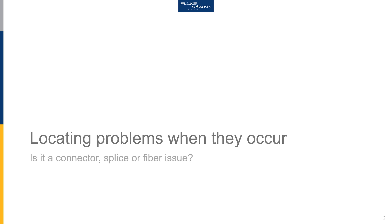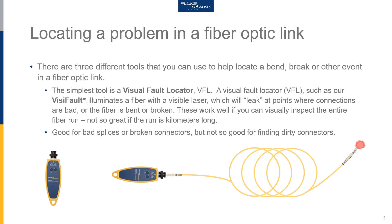Today we're going to look at locating problems when they occur on a fiber optic link. We're going to answer that age-old question: is it a connector? Is it a splice? Or is the fiber itself the issue that's preventing the application from working? There are three different tools that we often turn to to help locate a bend, break, or some other event in a fiber optic link.